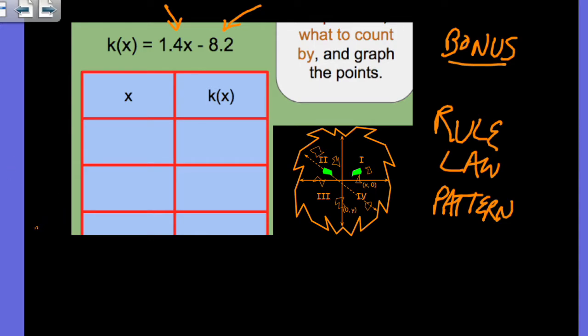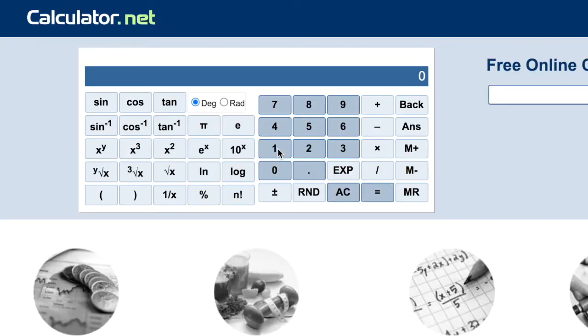So let's say x equals negative 17. When x is negative 17, if I run this into a calculator, I'm going to have 1.4 times negative 17 minus 8.2. So we've got 1.4 times negative 17 minus, final answer, you can see it on screen there, negative 32.